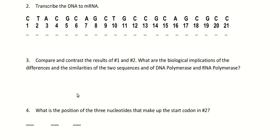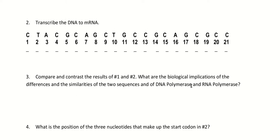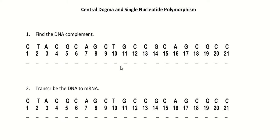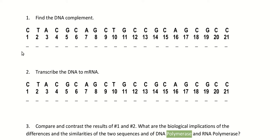The question is to compare and contrast the results from numbers 1 and 2 — what are the biological implications of the differences and similarities, and what are DNA polymerase and RNA polymerase? A polymerase is a protein that is essentially a copy machine. DNA polymerase makes DNA, so in the first one we're using DNA polymerase because the result produced a double-stranded DNA strand — we unzipped it and copied the DNA. Polymerase means copy machine.